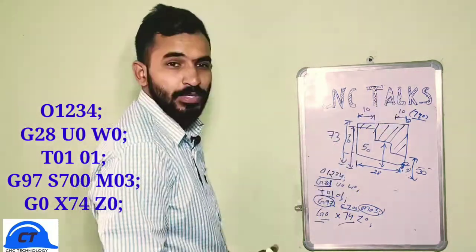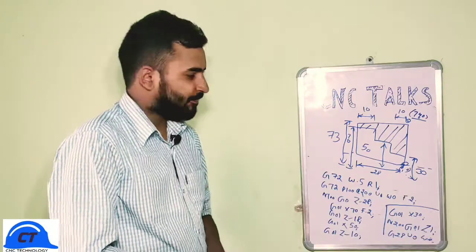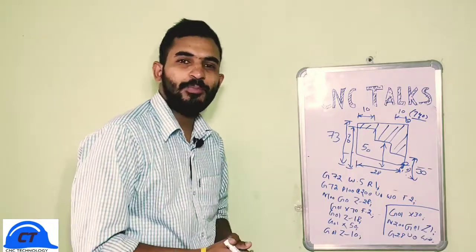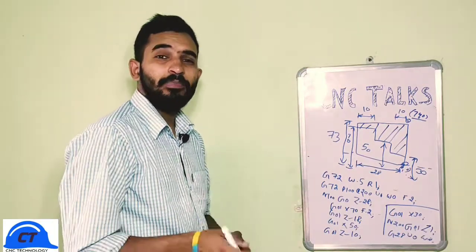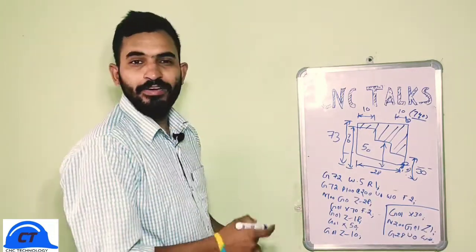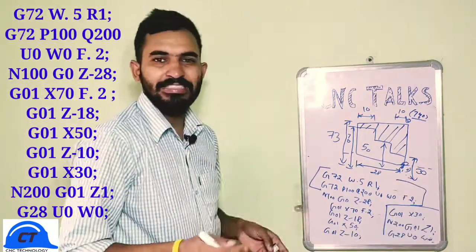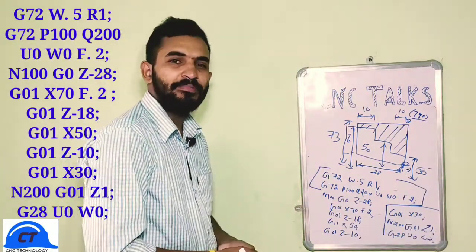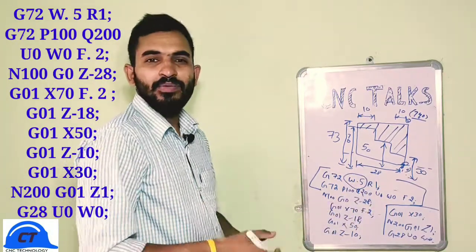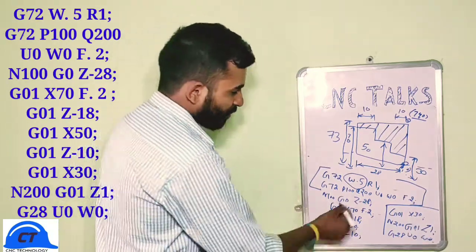As you can see, I have already created a program for this component using G72. This program is similar to our previous video on G71, just with one change. When we use G72, the syntax remains the same as G71 — the only difference is that in G71 we use the value of U, and in G72 we use the value of W.